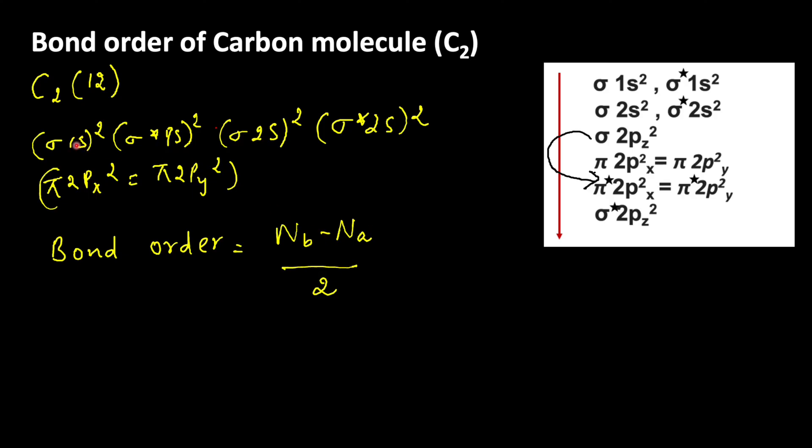Let us count the bonding electrons. Sigma 1s 2, so 2 electrons. Here, sigma 2s 2, so 2 plus 2 equals 4. Then here, 6, 8. So, total 8 electrons are present in bonding molecular orbitals.